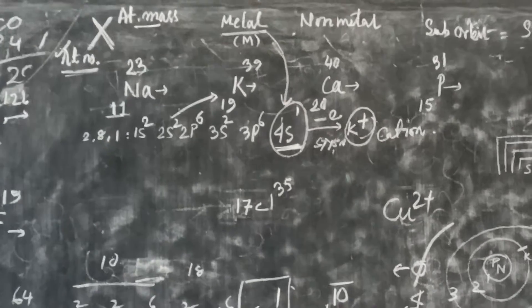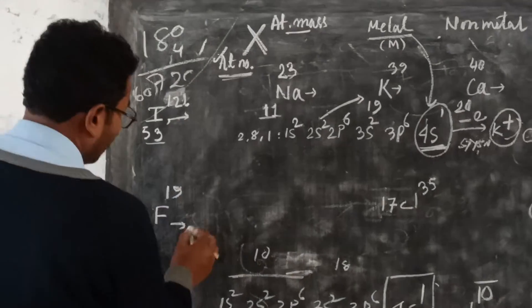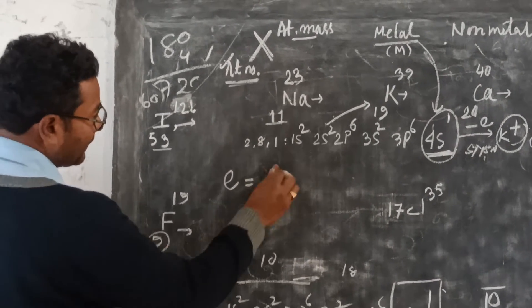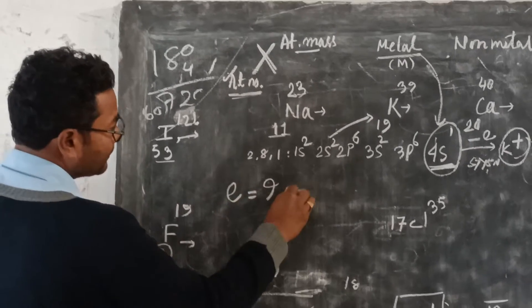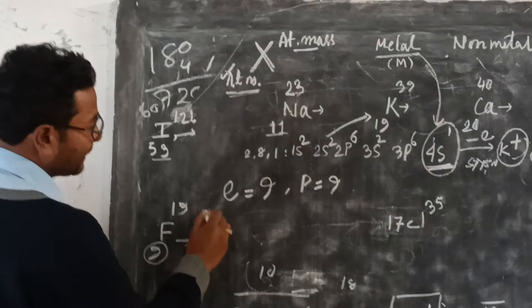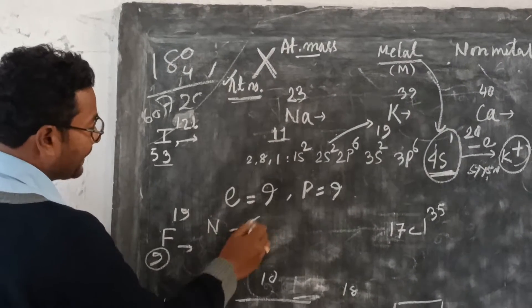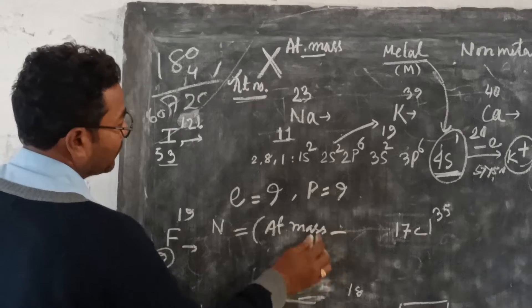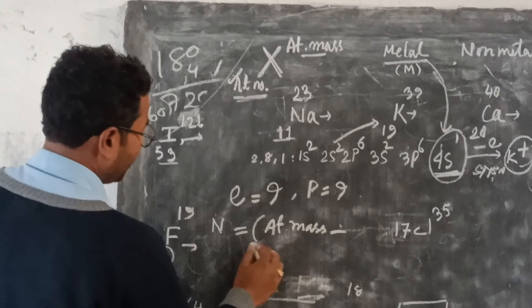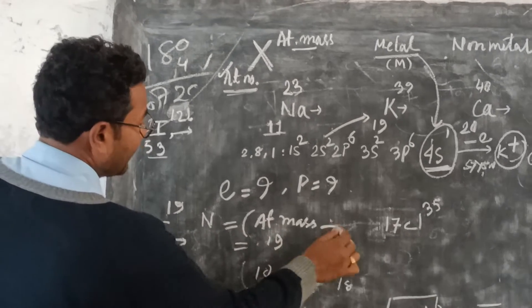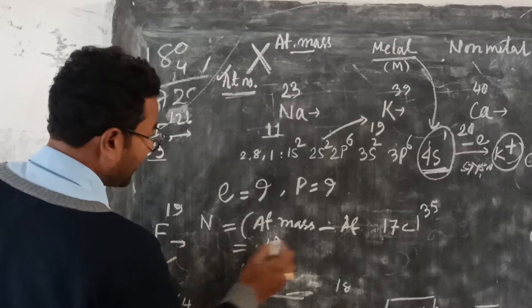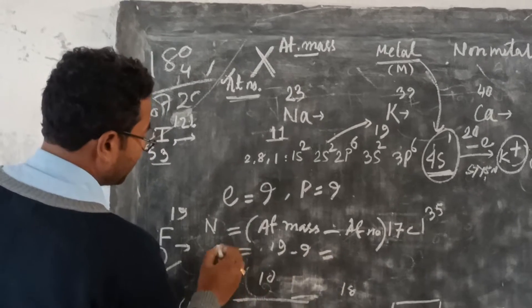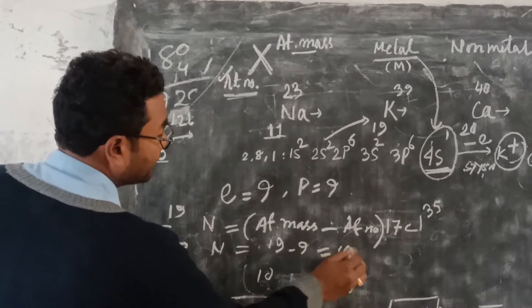We can calculate from the atomic numbers. For example, for fluorine, atomic number 9, you can easily calculate neutron number by subtracting the atomic number from the mass number. The mass number is 19, so the neutron number is 10.